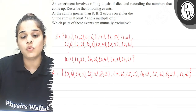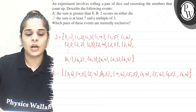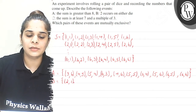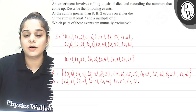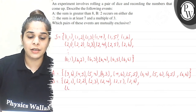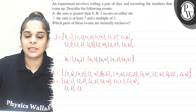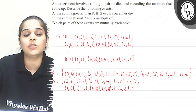Moving on — Event B is: 2 occurs on either die. So either the first die shows 2 or the second die shows 2. If first die is 2: (2,1), (2,2), (2,3), (2,4), (2,5), (2,6). For second die = 2: (1,2) — I won't write (2,2) again — then (3,2), (4,2), (5,2), (6,2). Those are all the possibilities where either die shows 2.